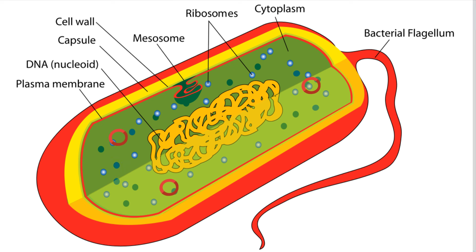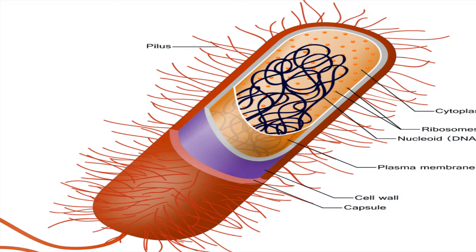You will also find gas vacuoles, and some bacteria have a whip-like tail called a flagella. Other bacteria have pili, which are small fibers that sprout from the cell surface and help the bacteria cell attach to certain surfaces.